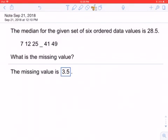We know the median but not the missing value. Below here it says the missing value is 3.5—we can ignore that, that's the wrong answer. So how do we do this?